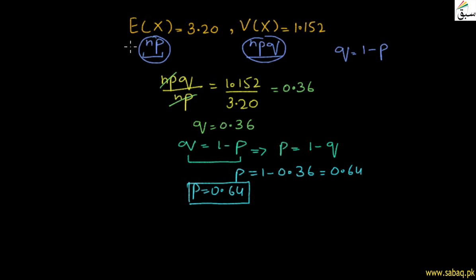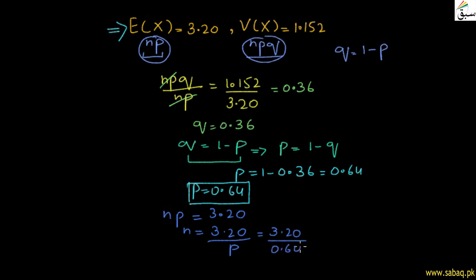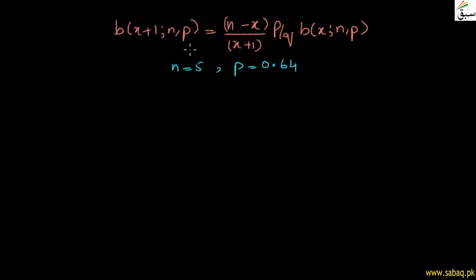Now we need to find n. We use the mean definition: np equals 3.20. We have p equal to 0.64, so n equals 3.20 divided by 0.64, which equals 5. So our parameters are n equal to 5 and p equal to 0.64. We will now put these into our recurrence formula.